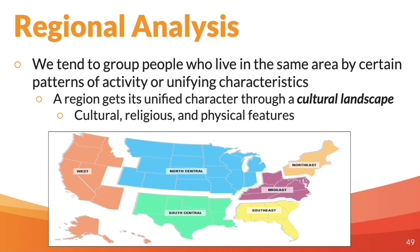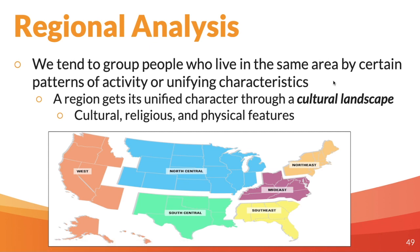Accents tell us a lot, but regional analysis doesn't just stop there. We tend to group people who live in the same area by certain patterns of activity or other characteristics. A region gets its unified character through what we call a cultural landscape — an extremely important term that comes up a lot on the AP exam. If you think about landscape, just think about the land itself. If you step outside your door and look upon the land, you could see different elements of culture.